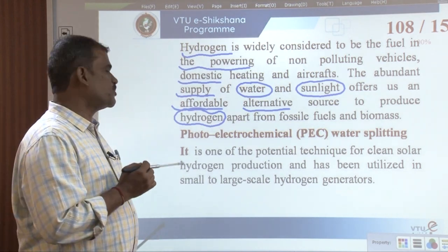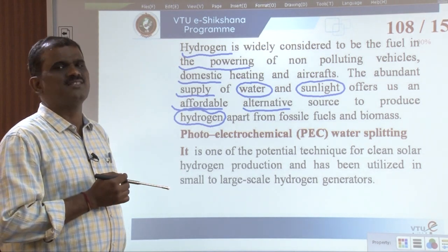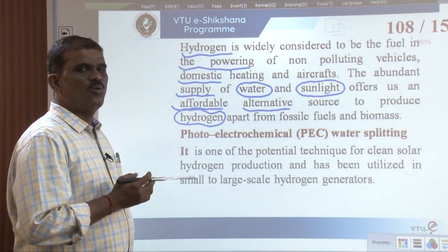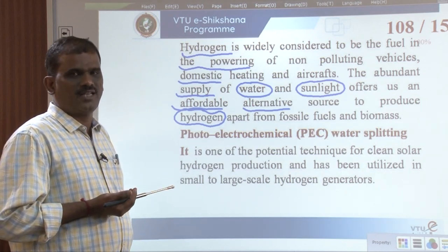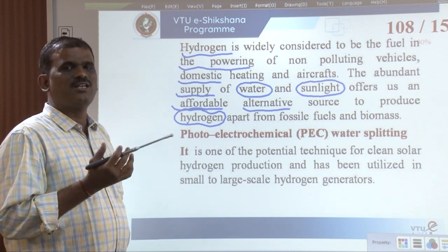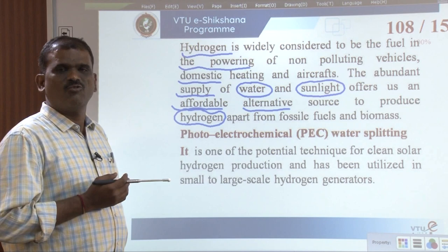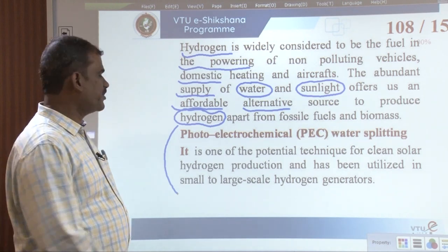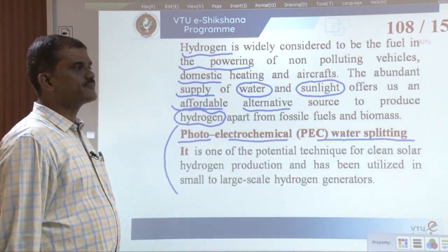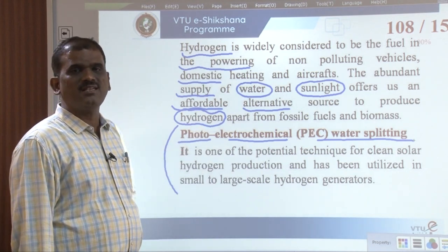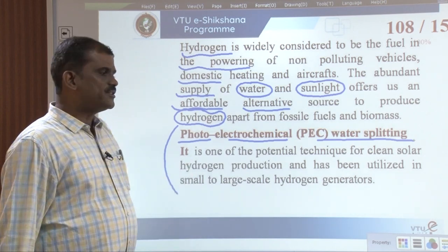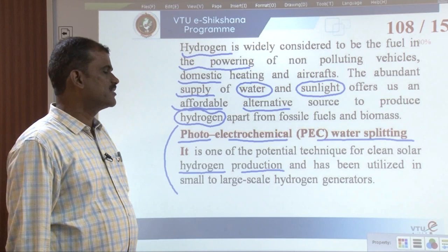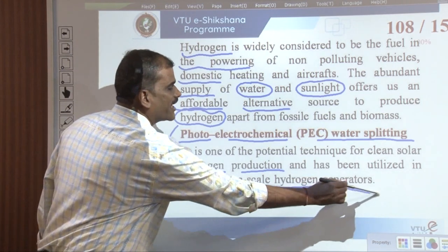One method to prepare hydrogen from water is photoelectrochemical (PEC) water splitting. It is one of the potential techniques for clean solar hydrogen production — using solar energy, hydrogen production occurs and is utilized in small to large-scale hydrogen generators. The basic principle of PEC is based on the conversion of light energy into electricity within a cell involving two electrodes immersed in an aqueous electrolyte.